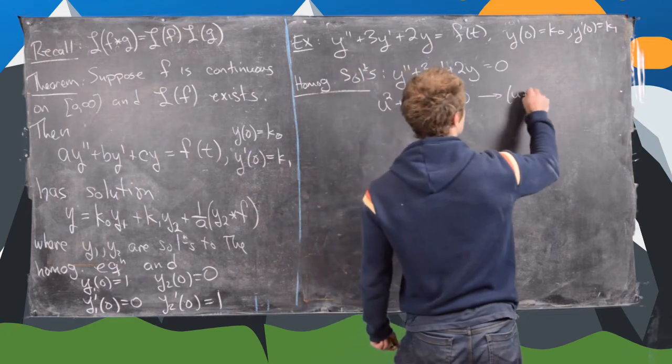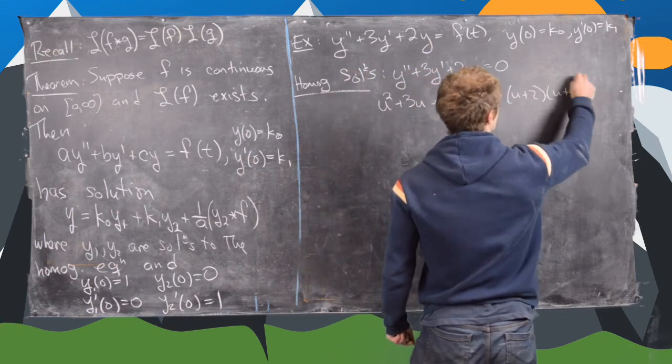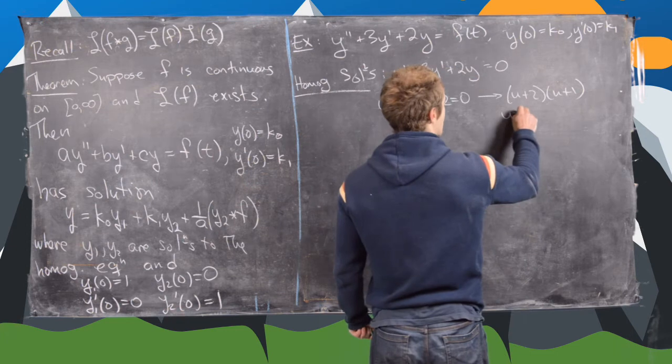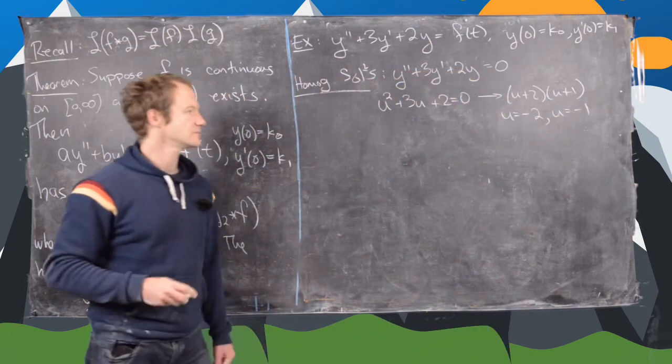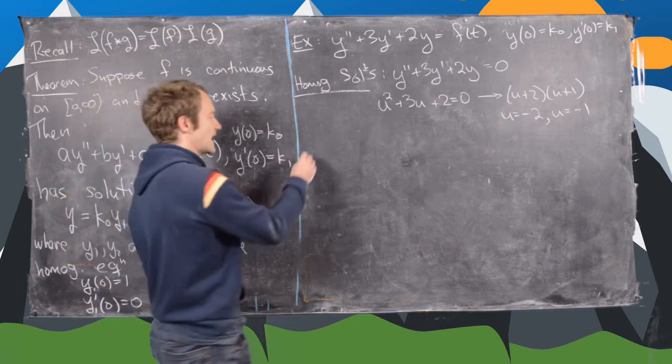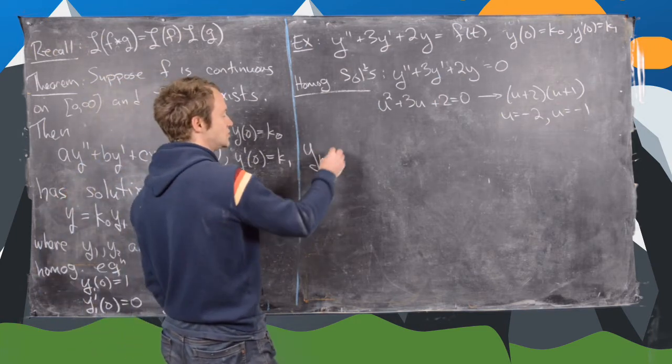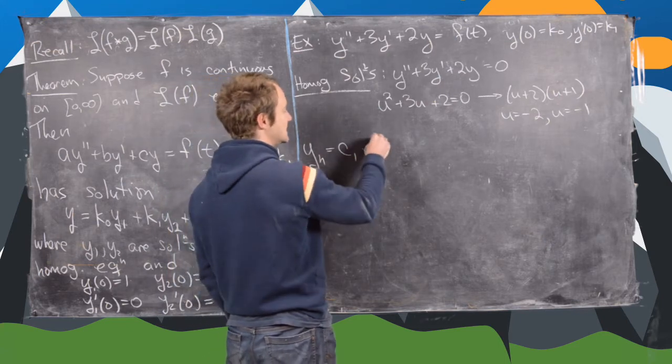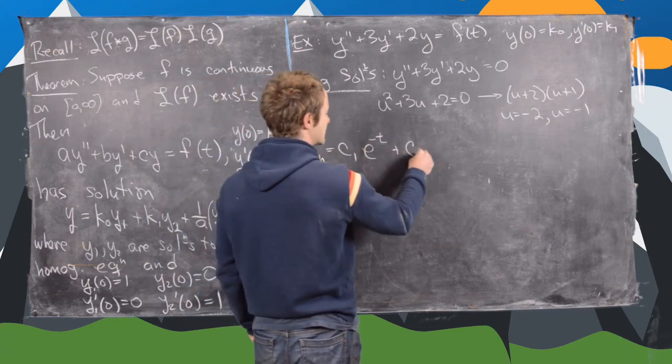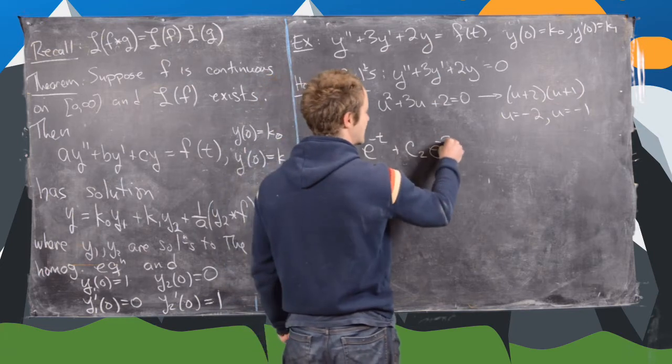Notice that factors like u plus 2, u plus 1, which means we have roots u equals minus 2, u equals minus 1. Okay, fantastic. So that tells us that we have our homogeneous solution is some constant c1 times e to the minus t plus some constant c2 times e to the minus 2t.